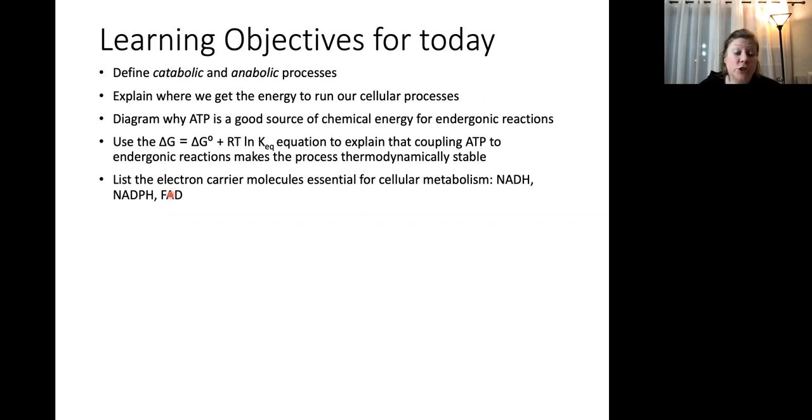We're going to talk about where we get the energy to run our cellular processes. We've already talked a little bit about why ATP is a good source of chemical energy for endergonic reactions, but we'll touch on that again. And we will use the delta G equals delta G naught plus RT natural log of the equilibrium constant equation to help us explain how coupling ATP hydrolysis to endergonic reactions makes that process thermodynamically more favorable. And we're going to talk about electron carriers because they're going to be an important part of metabolic processes in our body.